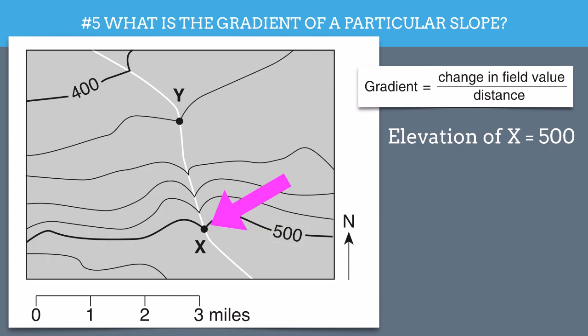Now, if you were to figure out the contour interval here, you would see that it's 20. And by doing a little bit of math here, you would see that point Y has an elevation of 420.